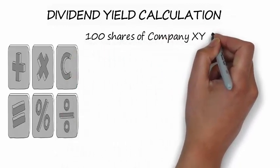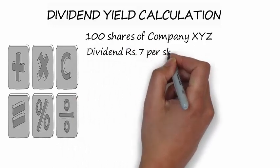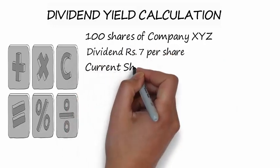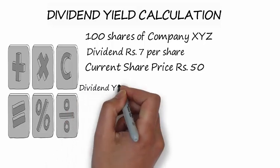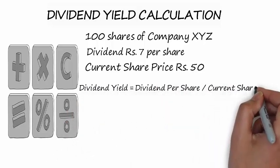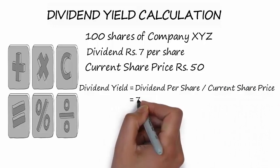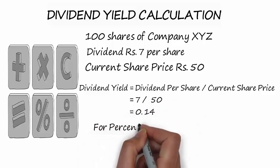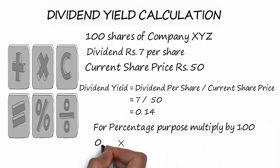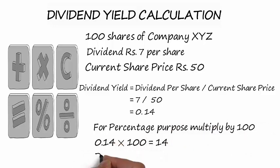For example, let's assume you own 100 shares of company XYZ which pays rupees 7 per share as annual dividend. If the current stock price is rupees 50, then using the formula: Dividend Yield = Dividend Per Share ÷ Current Share Price = 7 ÷ 50 = 0.14. Multiplying by 100 for percentage: 0.14 × 100 = 14. So the dividend yield will be 14%.